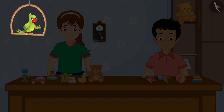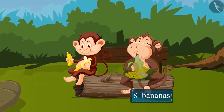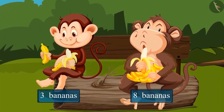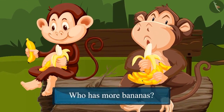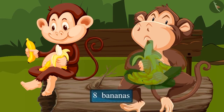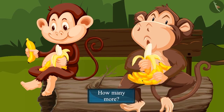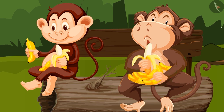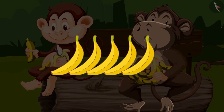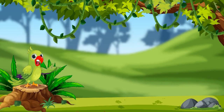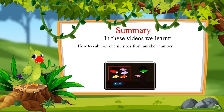Let us see another similar example. The fat monkey has eight bananas and the thin monkey has three bananas. Who has more bananas? Yes, the fat monkey has more bananas — but how many more? To find this out, we subtract the number of bananas the thin monkey has from the fat monkey's. Subtracting three from eight, we are left with five. The fat monkey has five more bananas than the thin monkey.